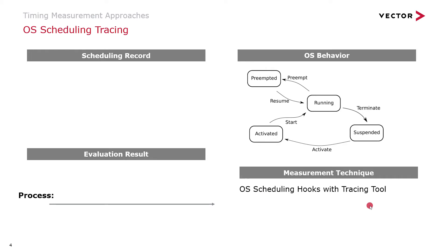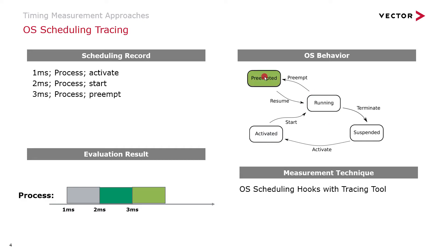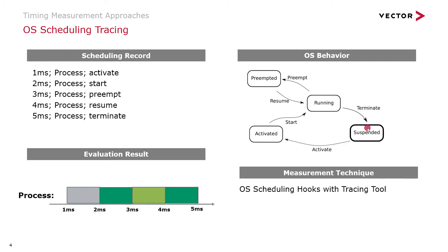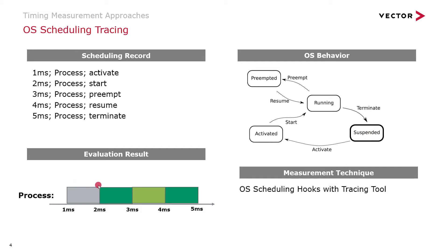These measurements are done with OS scheduling hooks and the tracing tool implements them efficiently. The OS activates a process, the process starts to run, maybe gets preempted by another process or an ISR, then resumes running. From a record of all those state changes we can summarize, for example, that a process was in an activated state for one millisecond — meaning it was delayed before starting. Additionally we get preemption and response time metrics for all processes available to the OS.